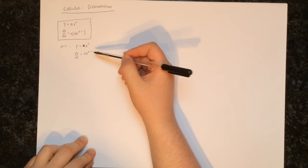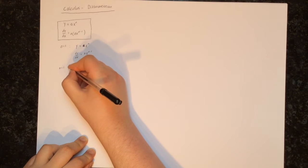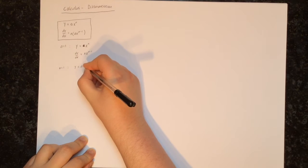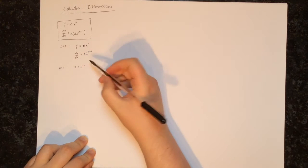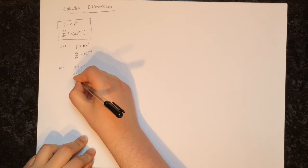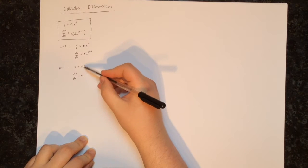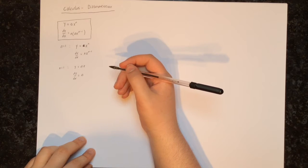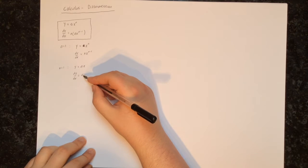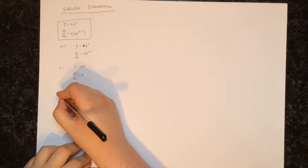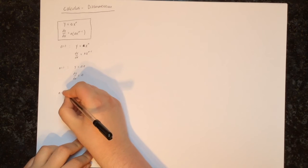We've also looked at what happens if n equals 1. In this case we have y equals ax, because the power of x is 1, and dy/dx will just be equal to a. So the x's will disappear, because when we reduce the power of x by 1 it will be x to the power of 0, and any number to the power of 0 is 1. So we will just be left with a multiplied by 1, which is a.